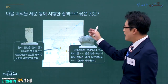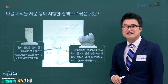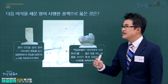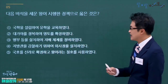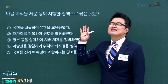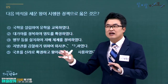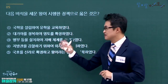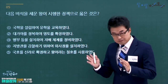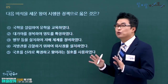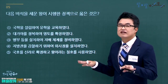5번 문제, 순수비와 단양적성비를 세운 왕은 신라 진흥왕입니다. 진흥왕이 시행한 정책을 고릅니다. 국학 설치는 신문왕, 병부 설치는 법흥왕, 지방관 감찰 외사정 설치는 문무왕, 국호 신라 확정은 지증왕입니다. 대가야 정복이 진흥왕의 업적이므로 정답은 2번입니다.